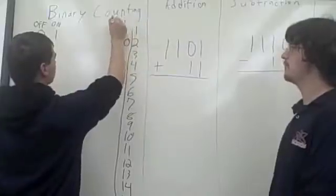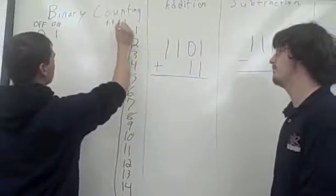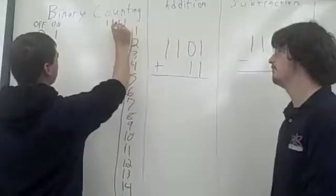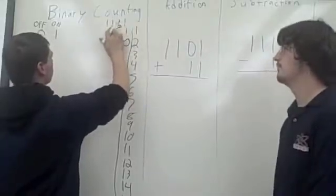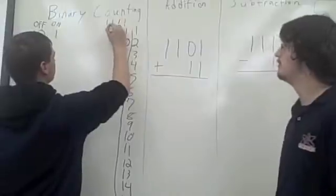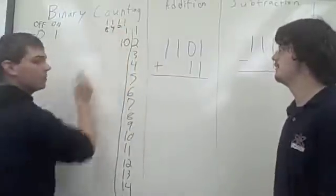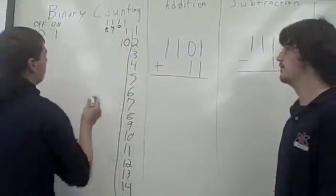1 in this place, 1 in this place, 1 in this place. This is equal to 1, 2, 3, or 4. 1, 2, 4, 8. It keeps on increasing by 2.